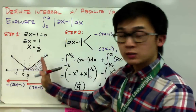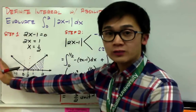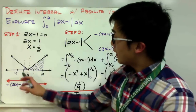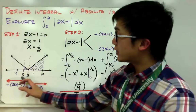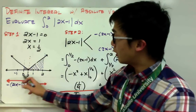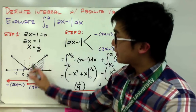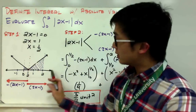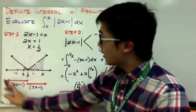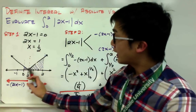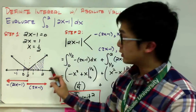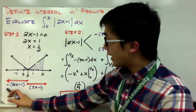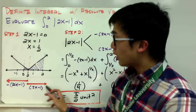So we have two partitions: one to the left of positive 1/2, and the other one to the right of the x-intercept at 1/2. Our interval is from 0 to 2, so I shaded my region from 0 to 2, creating two separate areas that I can evaluate using definite integrals. All values to the left will be negative, and to the right will be positive values for our function.